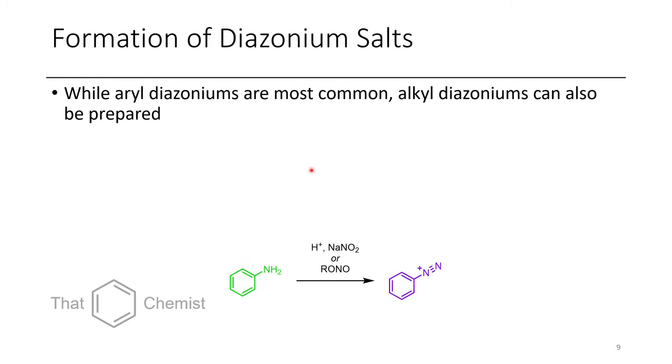And so the way that we form diazoniums, if you recall from a previous episode, I briefly mentioned this, we just treat an aniline with a diazotizing agent. We can also prepare aliphatic diazoniums, but those tend to be way more reactive and way less stable. So they're only ever seen as transient intermediates.